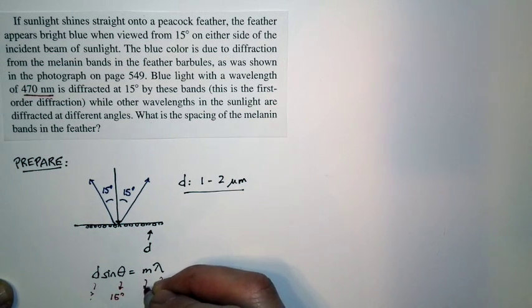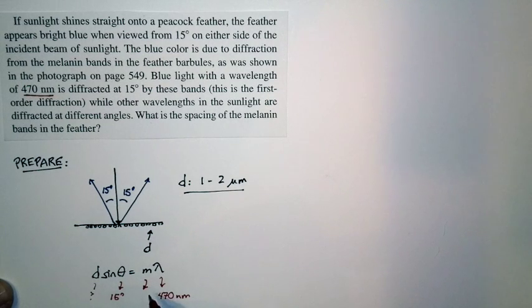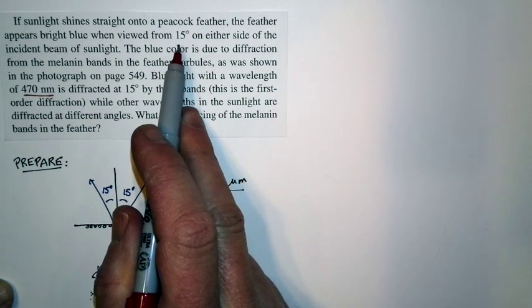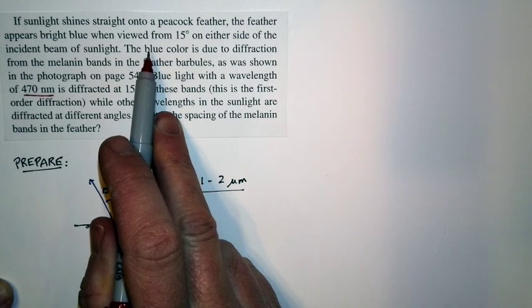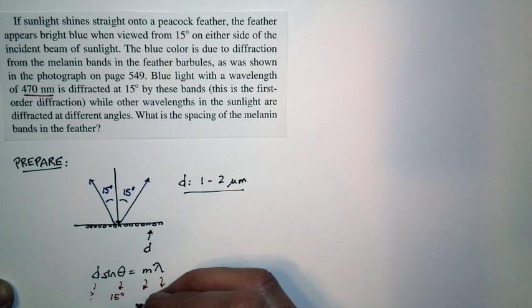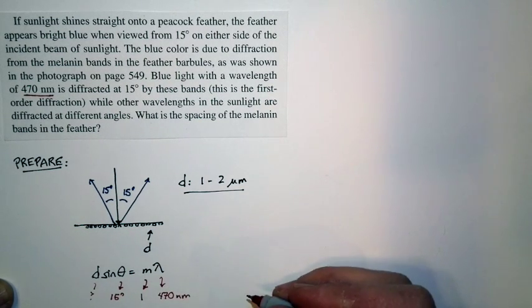Theta is 15 degrees. But how about M? What do we use for the order of the diffraction? Well, we're told that it appears bright blue when it's viewed from 15 degrees on the other side of the incident beam of the sunlight. Let's assume that's the first place that this occurs. And let's assume that this corresponds to M equals 1.